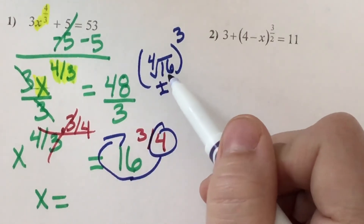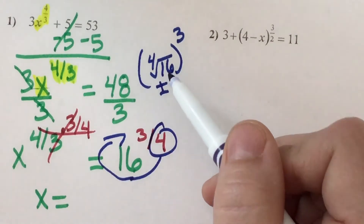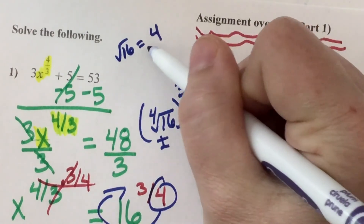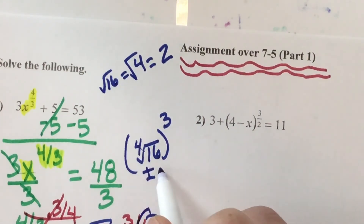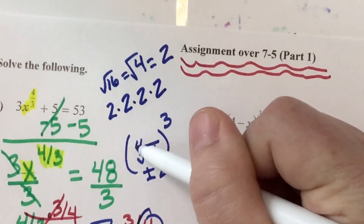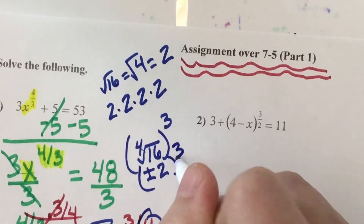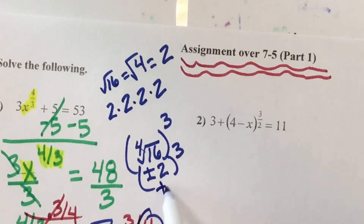For the 4th root, I taught you that when you take a 4th root, you just do square root twice. What's the square root of 16? 4. And then what's the square root of 4? 2. So the 4th root of 16 is 2, because 2 times 2 times 2 times 2 makes 16. Then I need to raise that to the 3rd: 2 times 2 times 2 is 8, and negative 2 times negative 2 times negative 2 is negative 8. So this makes plus or minus 8.